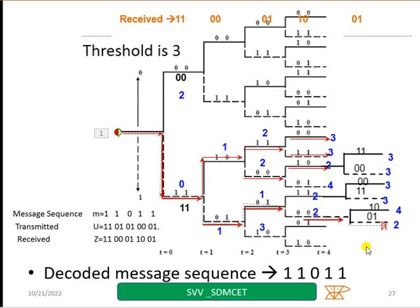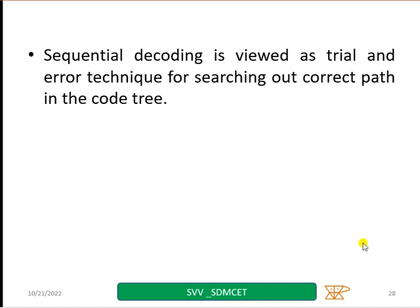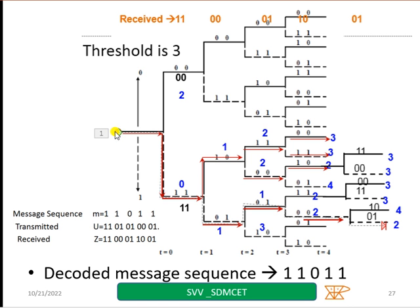So, what I can do? Decode the message. So, now the decoding message is what I have. From here, I have this path followed by this path and this path and this path. So, this is the decoded 1, 1, 0, 1, 1. So, this is how it works.